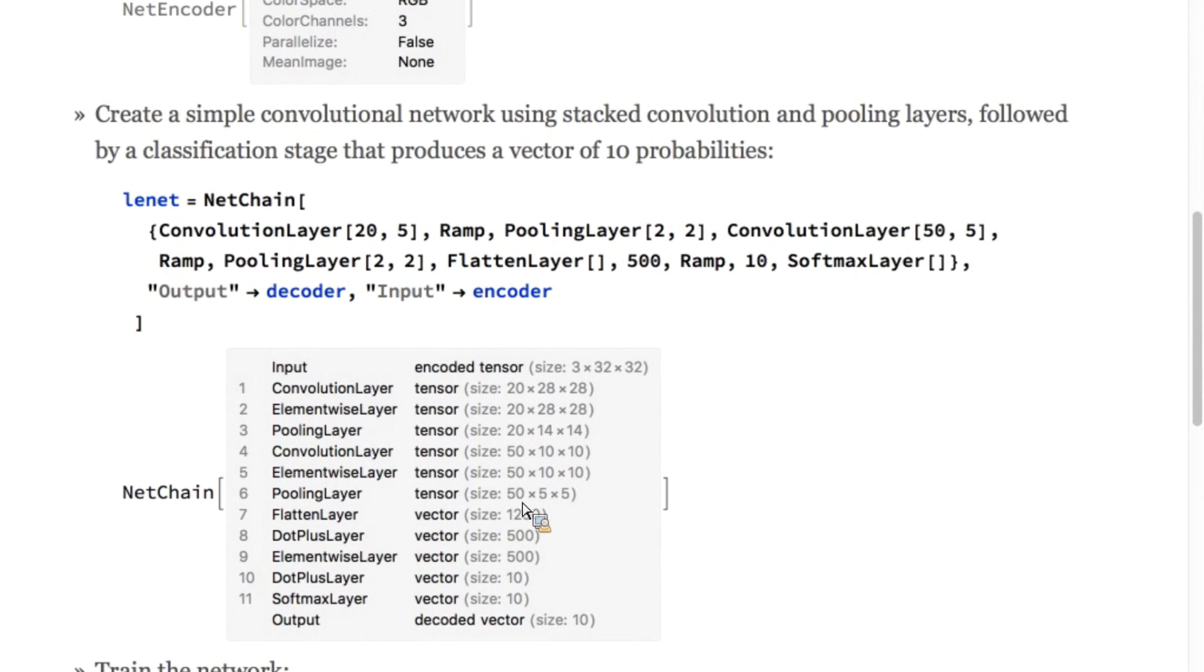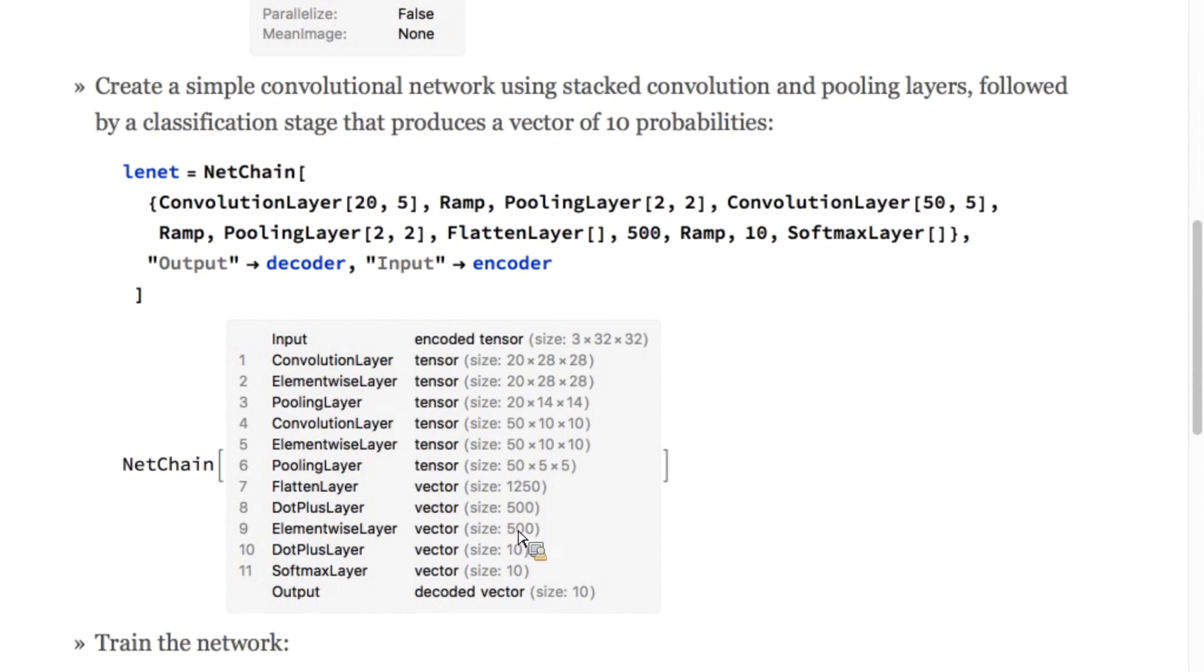The spatial dimension is reduced, but the number of channels is much higher. These are sort of abstract feature channels. We'll flatten that tensor into a vector with a flattened layer, effectively throwing away the spatial information. And from that, we'll use a two-layer perceptron and a softmax layer to produce the final probabilities.